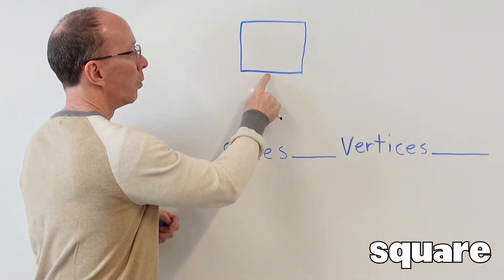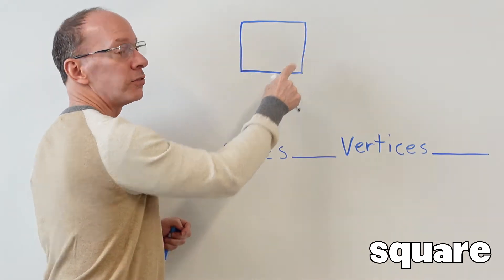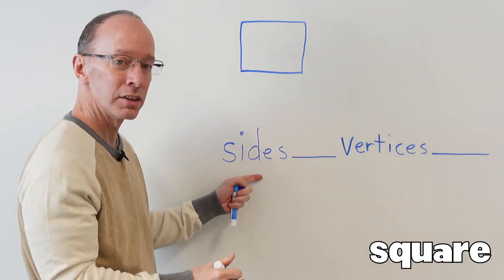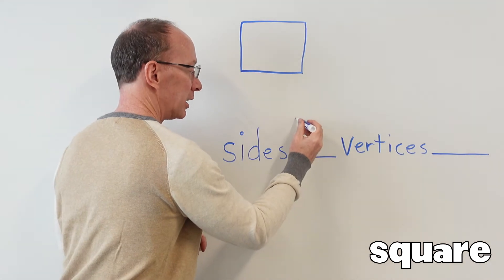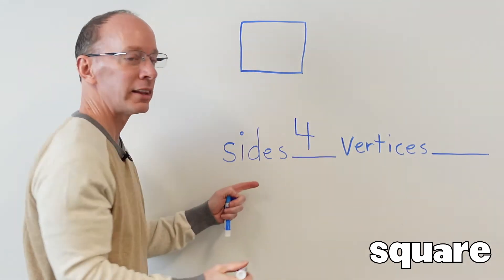It has one, two, three, four sides. So this is sides right here, and I put four right there.